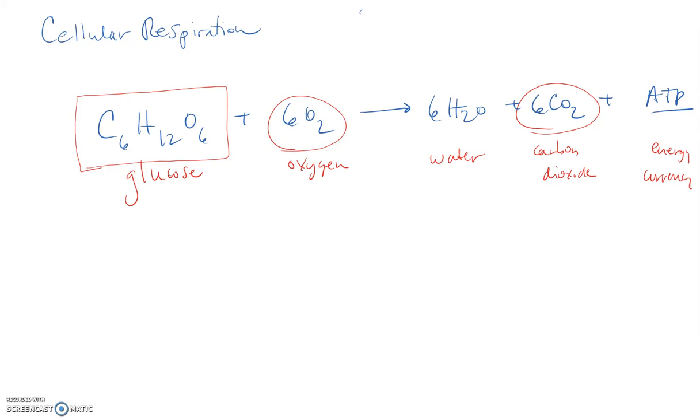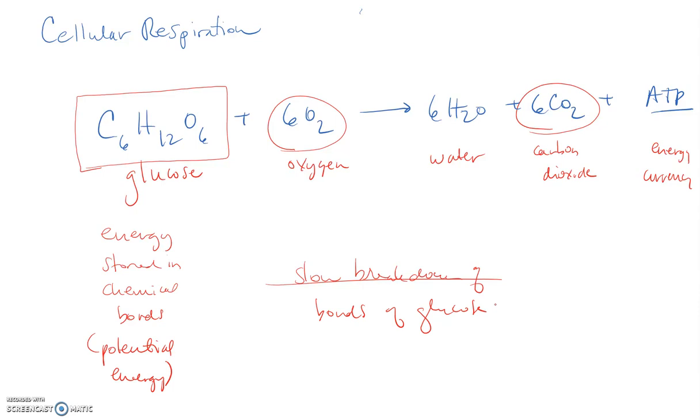This glucose molecule does have energy stored in the chemical bonds—bonds between carbons, hydrogens, and oxygens. These bonds are potential energy. This process is essentially the slow breakdown or oxidation of the bonds of glucose. As those bonds are broken, energy is released and used to generate ATP molecules, which the cell uses to do its cellular work.